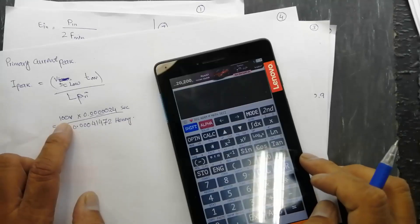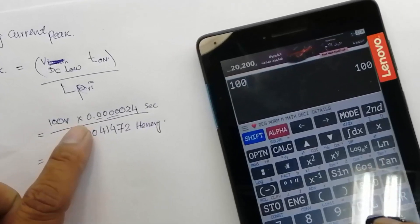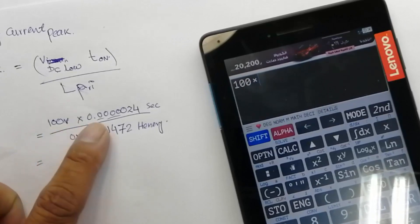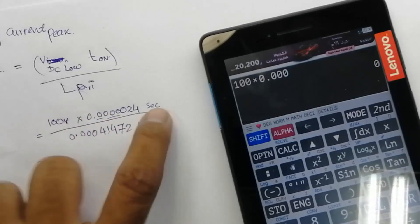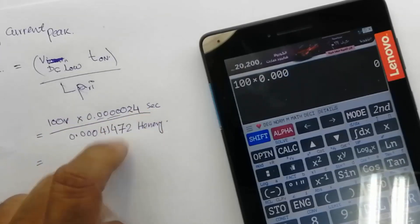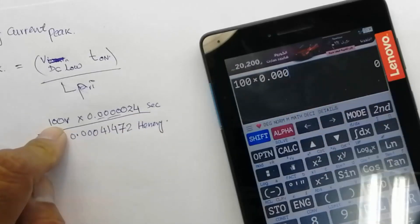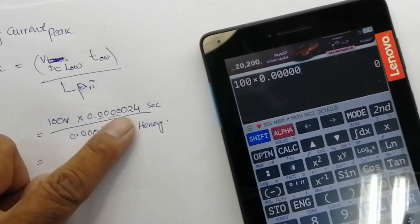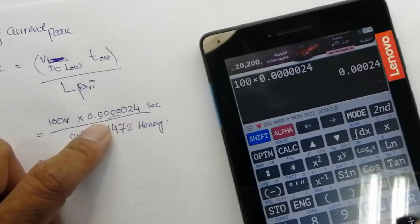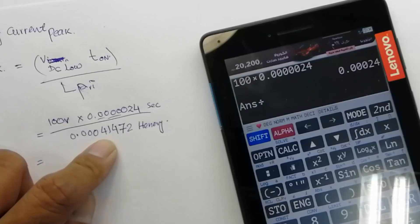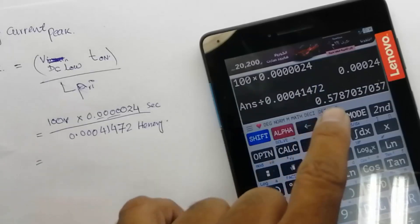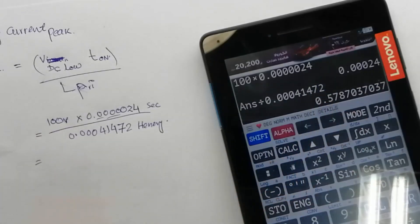The amount of current: 100 volts multiplied by 0.0000024 divided by 0.00041472. It is 0.5787 ampere.